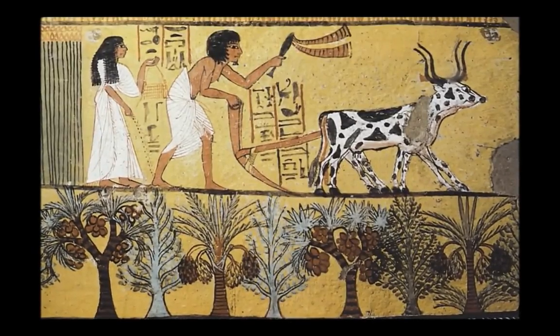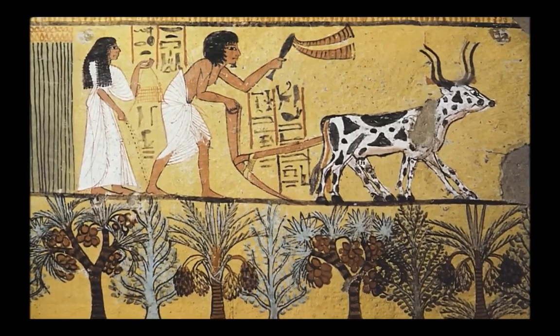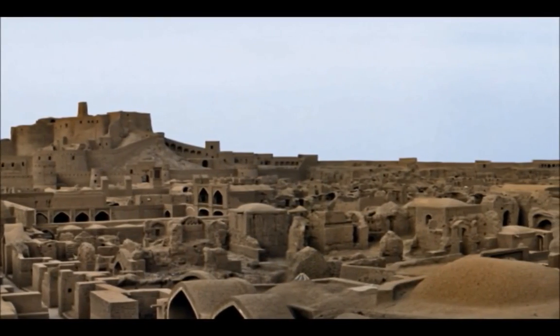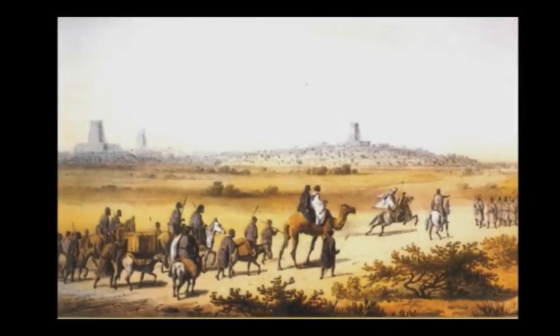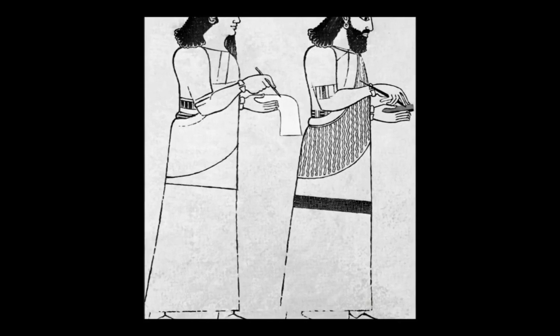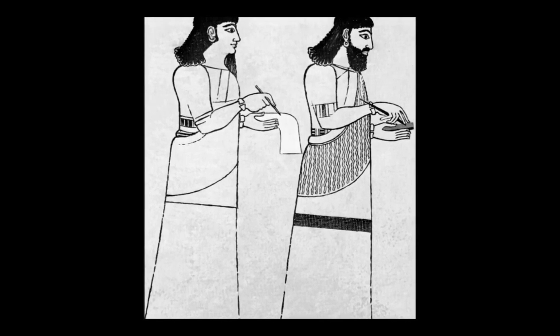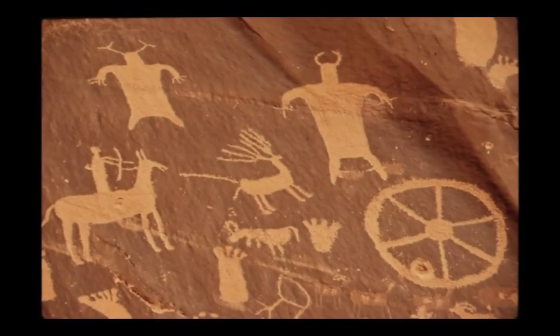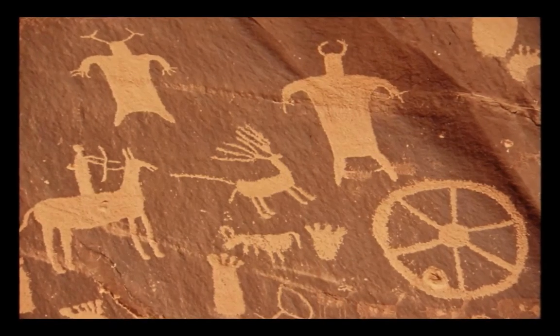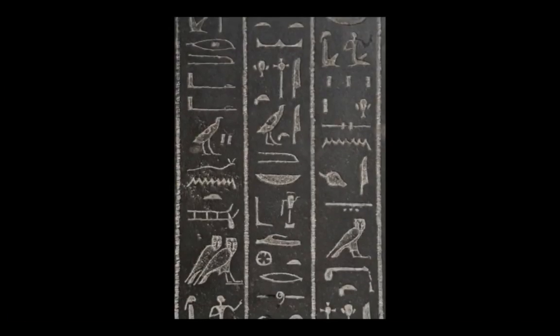There was so much food available that some people began to do work not directly related to getting food. Those people started to specialize — concentrate on becoming experts in one kind of work. One person could learn how to make really good pottery, another could learn to weave better cloth, and they could trade those things to the people growing food to get what they needed to eat. As technology improved and inventions like the wheel and irrigation allowed people to grow even more food, villages grew bigger and became towns and cities.